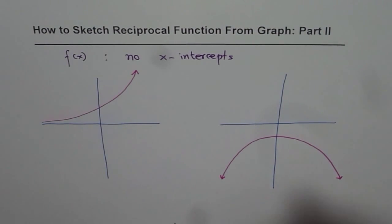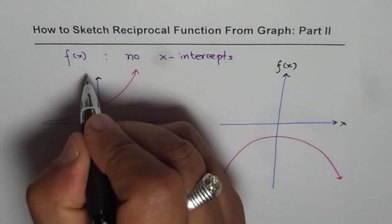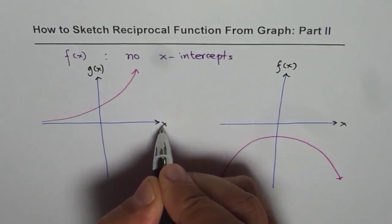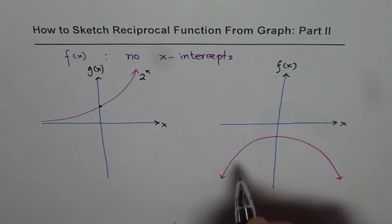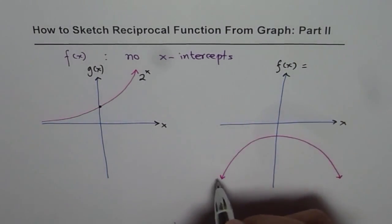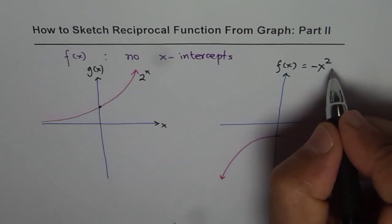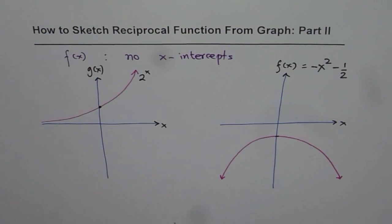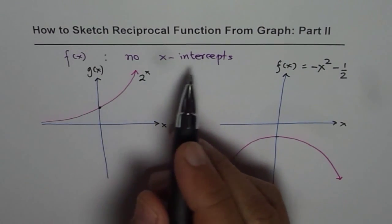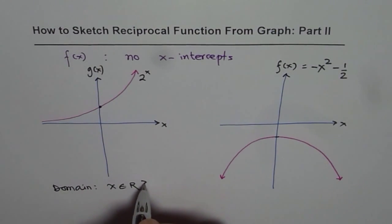To help us sketch, we will put some values. We have the x-axis here, our function f of x — let us call the exponential g of x, with x values. We say g of x equals 2 to the power of x. And f of x, since it is opening downwards, we write minus x squared minus one half. The important thing is that both these functions do not have x-intercepts, which means the domain is all real numbers — x belongs to real numbers.